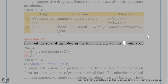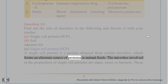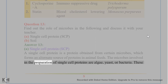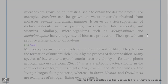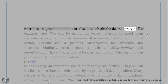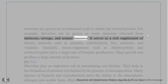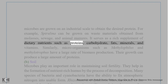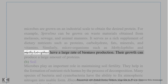Question 13. Find out the role of microbes in single-cell protein (SCP) and soil. Answer 13A. Single-cell protein (SCP) is a protein obtained from certain microbes, forming an alternate source of proteins in animal feeds. The microbes involved are algae, yeast, or bacteria, grown on an industrial scale to obtain the desired protein. For example, Spirulina can be grown on waste materials from molasses, sewage, and animal manures, serving as a rich supplement of proteins, carbohydrates, fats, minerals, and vitamins. Microorganisms such as Methylophilus methylotrophus have a large rate of biomass production, yielding large amounts of protein.